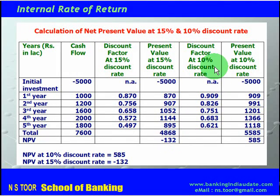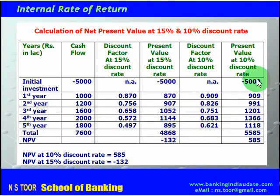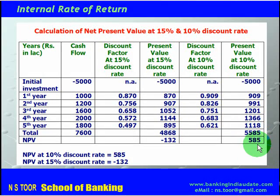Now we calculate at the 10% discount rate. At 10%, the first year: 1000 multiplied by 0.909 gives the present value. For the second year, the value comes to 991. The present values for the third, fourth, and fifth years are calculated similarly. The total present value of cash inflows from year one to five comes to 5585, against an initial investment of 5000. This means the net present value is positive 585.